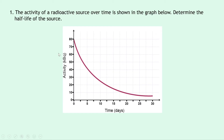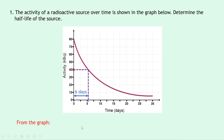Firstly we identify the starting activity, which is 80 on our curve. We then go to half of 80, which is 40, and put a mark on our curve. We draw a dashed line horizontally from that point along to the curve, and then from the curve we draw another dashed line down to the x-axis. That chunk of time from the origin to this dashed line is roughly about six days. So from the graph, we can see the half-life is six days.